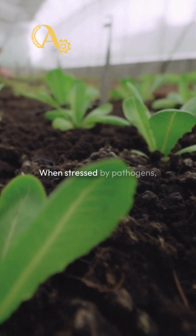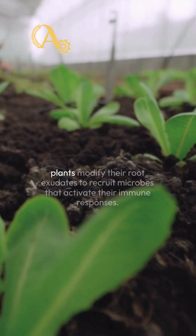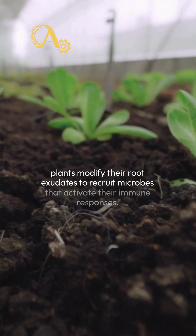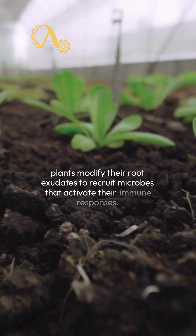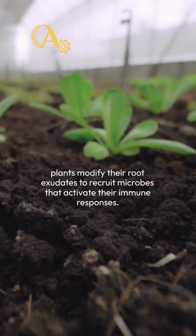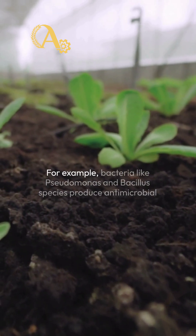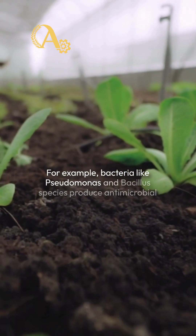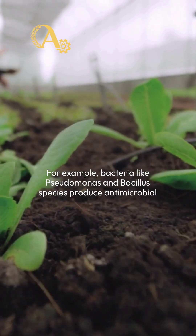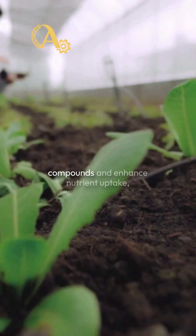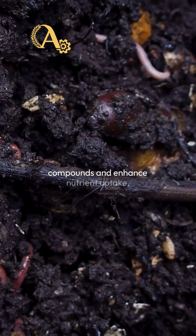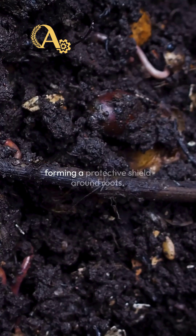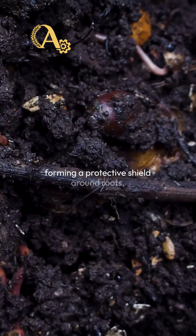When stressed by pathogens, plants modify their root exudates to recruit microbes that activate their immune responses. For example, bacteria like Pseudomonas and Bacillus species produce antimicrobial compounds and enhance nutrient uptake, forming a protective shield around roots.